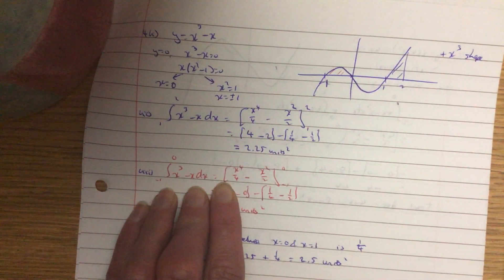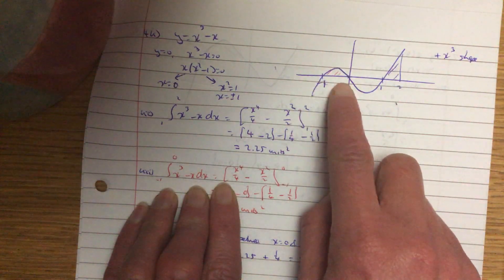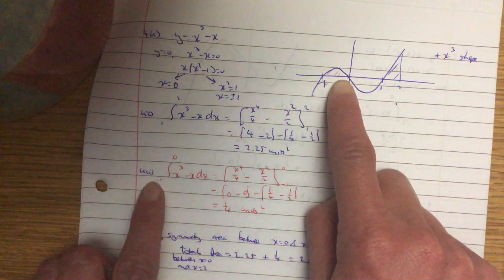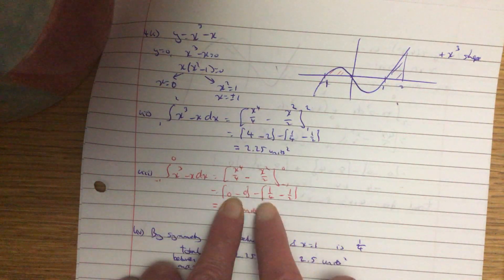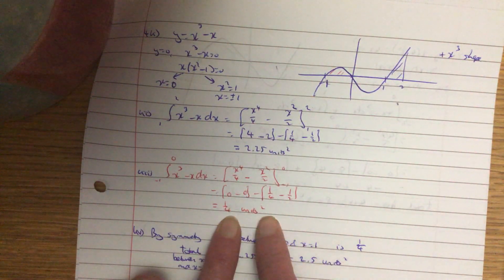Part 3 is between minus 1 and 0. It's the red bit. So minus 1 to 0. So same integration, sub in the upper value of 0. Take away, sub in the lower value of minus 1. Working that out.